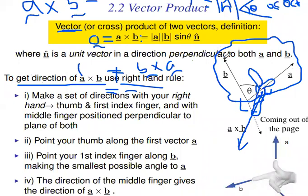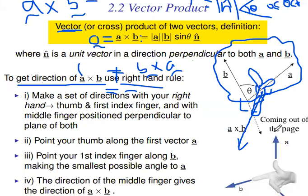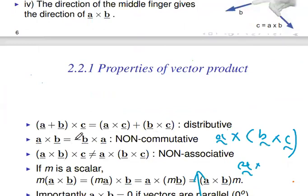When you use the right-hand rule here, this is the direction for A cross B — coming out of the screen. Now consider B cross A: the first vector is B, the second vector is A. Keep your thumb along B, your index finger along A, and position your middle finger perpendicular to A and B. That gives the direction of B cross A, which is going into the screen. So the direction reverses — that's why you put the negative sign. To make them equal, you must multiply by negative one.